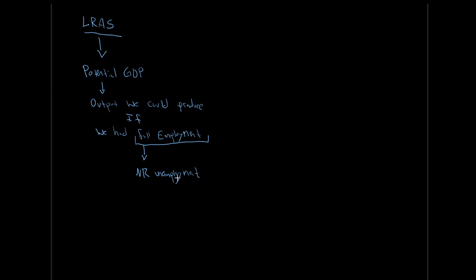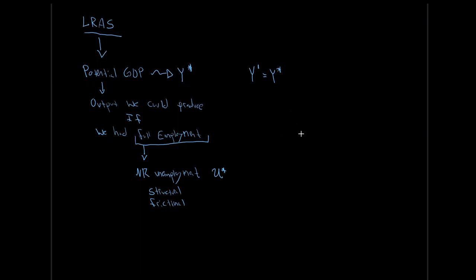The natural rate of unemployment — which I'll refer to as U-star — is just our structural and our frictional unemployment. Potential GDP I'll refer to as Y-star. We've already talked about this: when actual output equals potential — the amount of stuff we actually make being the same as our potential — then our actual rate of unemployment equals our natural rate of unemployment.